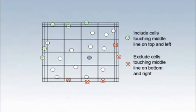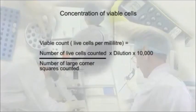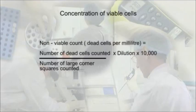Calculate the concentration of viable and non-viable cells. To calculate the concentration of viable cells in the cell suspension, divide the number of live cells counted by the number of large corner squares. Then multiply by the trypan blue dilution factor, usually 2, and then by 10,000 to convert to cells per millilitre. Calculate the dead cell count in a similar way.